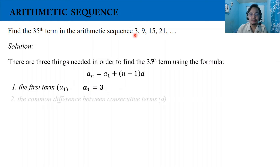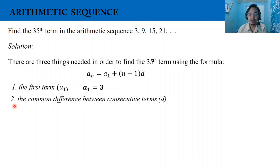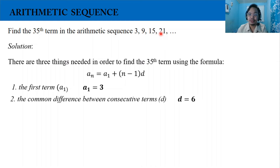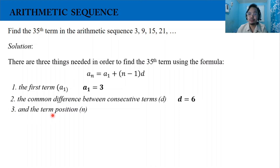Now, the common difference between consecutive terms, or d, is equal to 6. Why? If we subtract the second term from the first term, or 9 minus 3, that will be 6. If we subtract the third term from the second term, 15 minus 9, that is also 6. And subtracting the fourth term from the third term, 21 minus 15, the difference is also 6. That is why the common difference is 6. Lastly, we identify the term position, which is n equals 35.